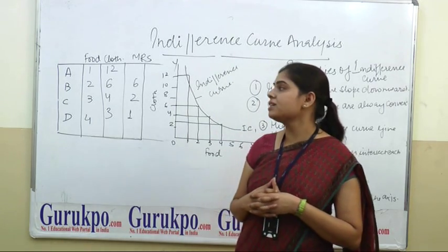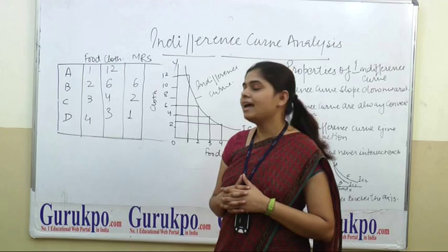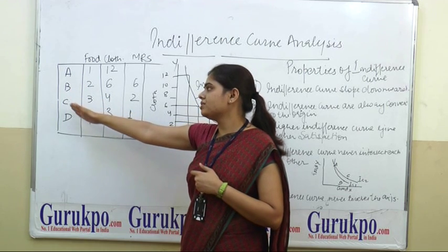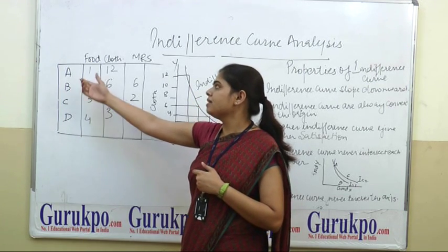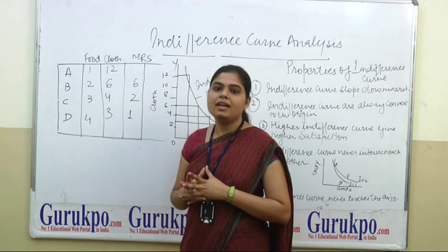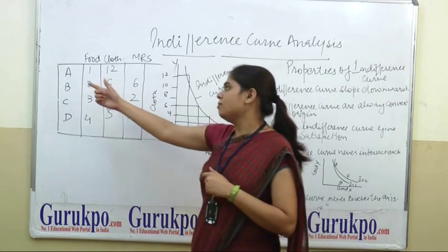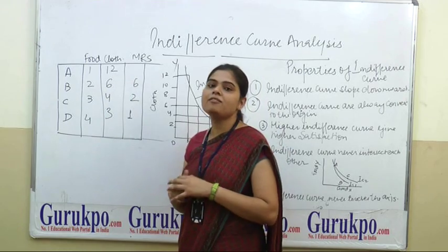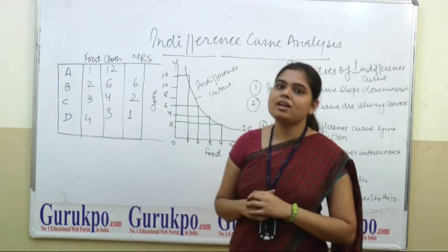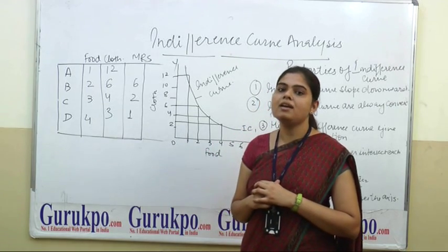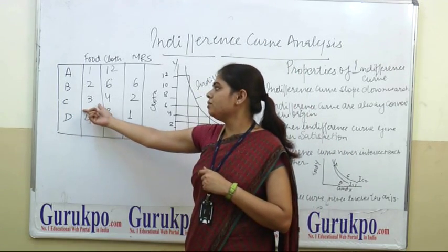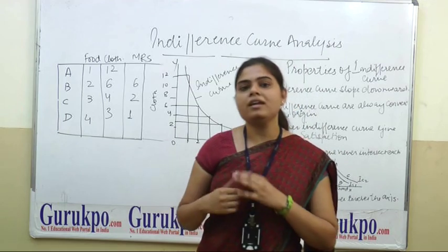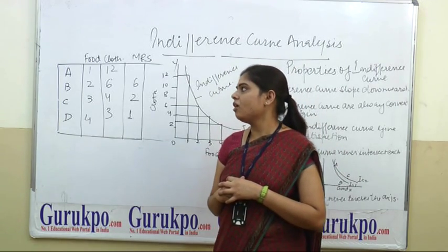Here we take the example of two goods — first one is food and second one is cloth. Both have various combinations in this table: combination A, combination B, combination C and D. When the consumer consumes one unit of food and 12 units of cloth, it gives equal satisfaction as combination B, where he uses two units of food and six units of cloth. Similarly, combination C — three units of food and four units of cloth — gives the same satisfaction.